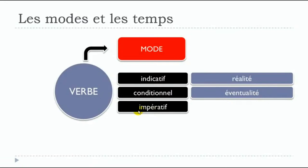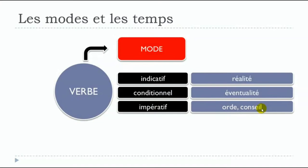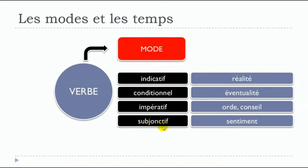Then we'll have the imperative mood, to express l'ordre — the order — or le conseil — advice. And then we'll have le subjonctif, which can be quite tricky, especially at the beginning, because it doesn't really exist in English, and it's used to express what we call le sentiment. So the main moods are: l'indicatif, le conditionnel, l'impératif, and le subjonctif.